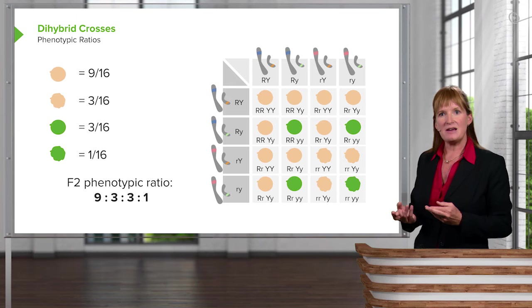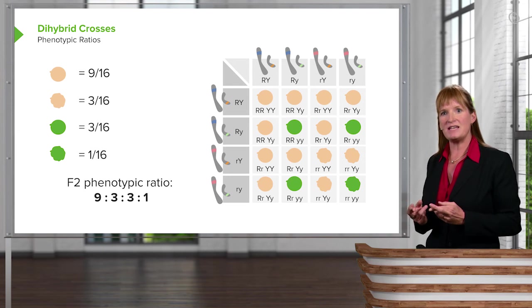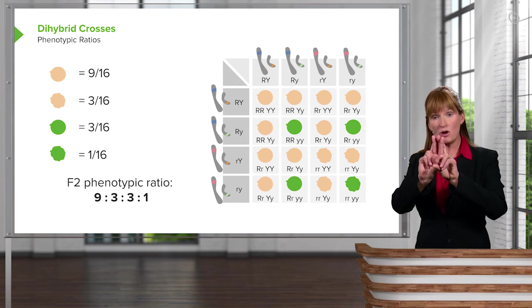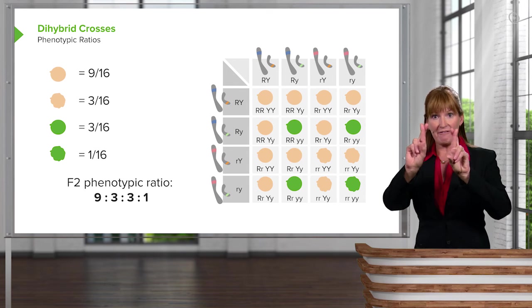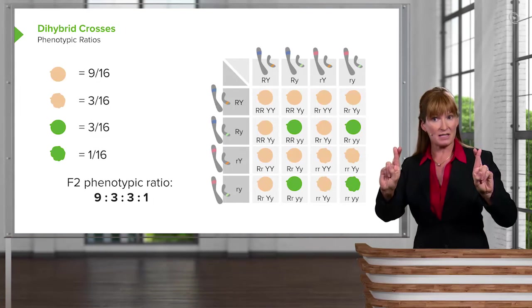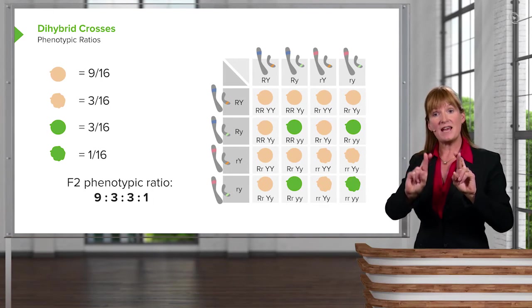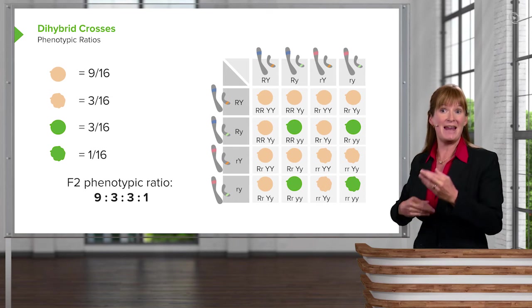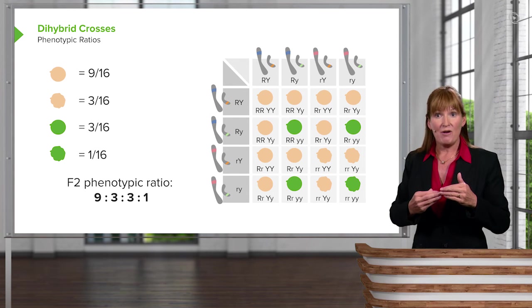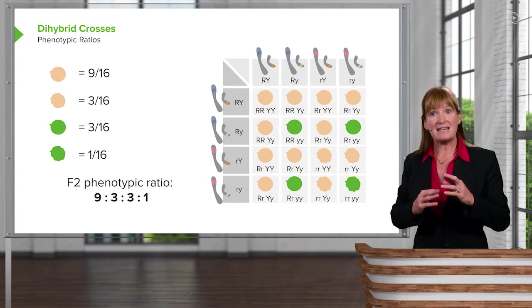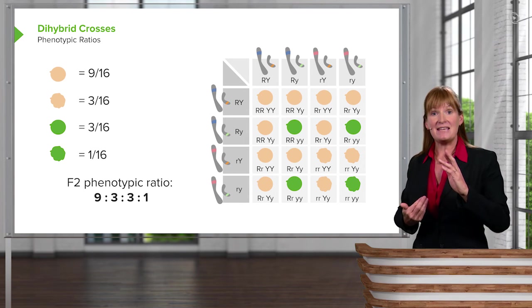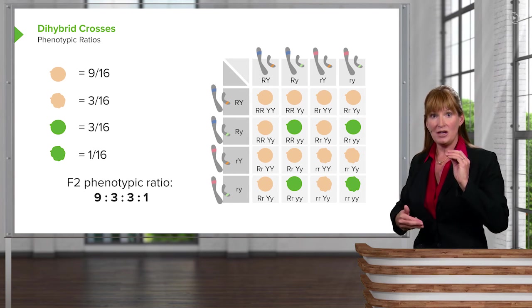So from the data that he obtained, he not only supported his suggestion that homologous chromosomes or traits for a different character segregate from each other that we saw in the monohybrid crosses, he also was saying that they do so independently of each other, such that the seed shape of round and wrinkled segregates separately or independently than the seed color, yellow and green.